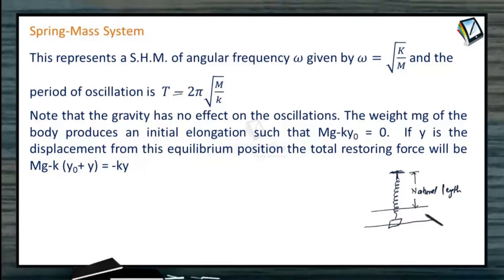At this point, the block is at a position where the spring is elongated by amount Y₀ and the net force acting on this block has become zero, such that KY₀ equals MG. This is the equilibrium position of this block.